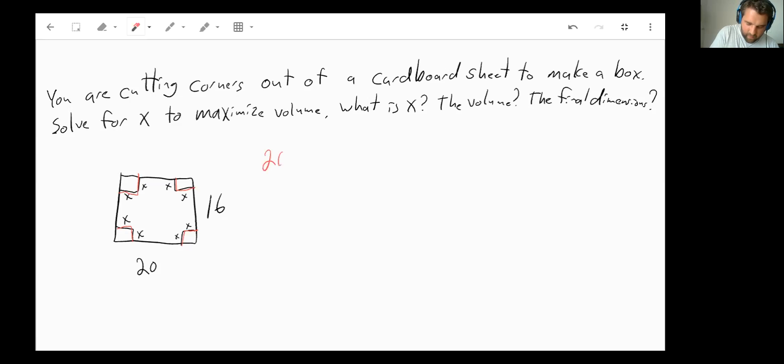Now volume is just length times width times height. So our length would be 20, but we're cutting out two x's worth of the 20-inch side. So 20 minus 2x will be our length. Our width will be 16 minus 2x because it was 16 inches wide, but then we are cutting out, again, two x's worth. And then our height is going to be x because that's going to be how tall this is once it gets folded. Well, we can multiply this out. And when we do that, we're going to get 320 minus 72x plus 4x squared. And then let's just be multiplied by x, so we'll get 320x minus 72x squared plus 4x cubed.